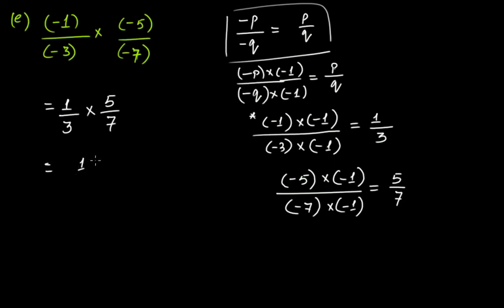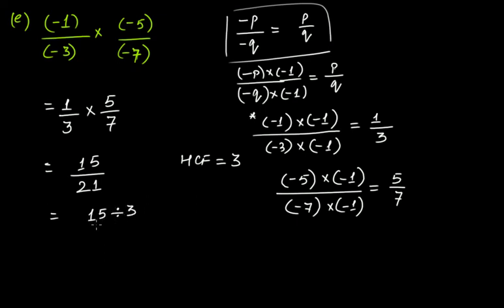So this comes as 1 over 3 times 5 over 7, which is 15 over 21. Now the highest common factor of 15 and 21 is 3. So 15 divided by 3 over 21 divided by 3 gives you 5 over 7. So this is the final answer.